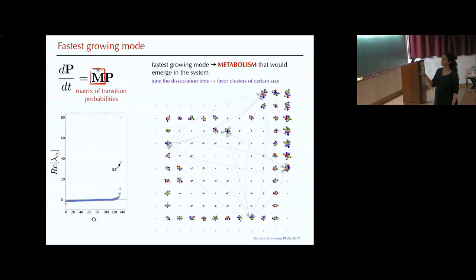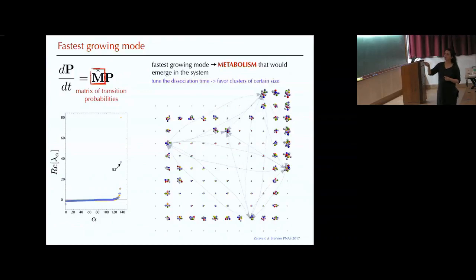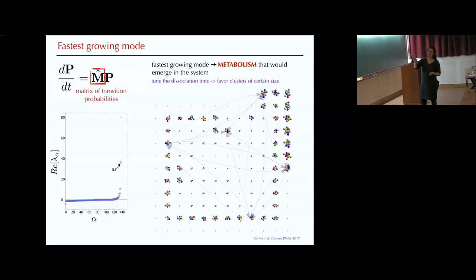This is an example of the mode that we get. The size of the cluster corresponds to the concentration we end up getting. The lines are an example of the cycle we can end up getting. By influencing this time dependence — the association time — we can influence the size of the cluster we see in the final winning metabolic mode.